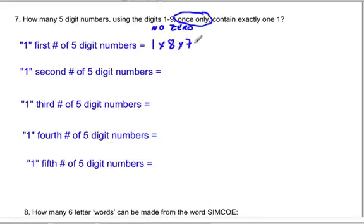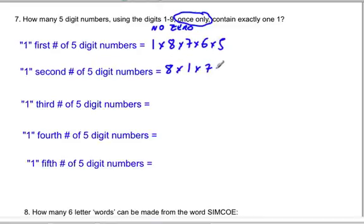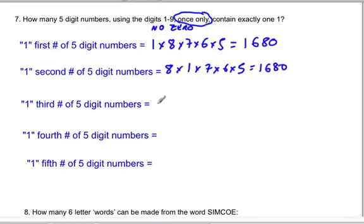We have seven choices for the third digit, six choices for the fourth, and five choices for the fifth. If 1 comes second, there are only eight digits to choose from, and since 1 is automatically our second digit, that's times one, and we have seven digits left for the third, six for the fourth. Both cases give the same product: 1680.